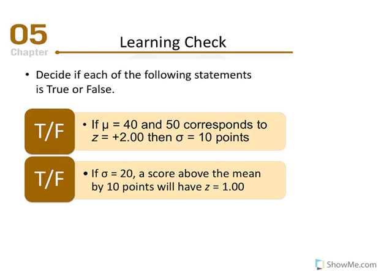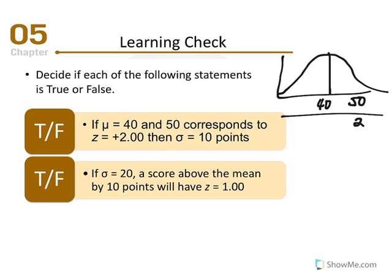True or false: if the population mean equals 40 and a score of 50 corresponds to a Z-score of 2, then standard deviation must equal 10 points. Drawing this out: the mean is 40, and we're saying a score of 50 is 2 standard deviation units above the mean. If standard deviation were 10, moving up 2 units would place us at 60, not 50 — so this doesn't seem right.